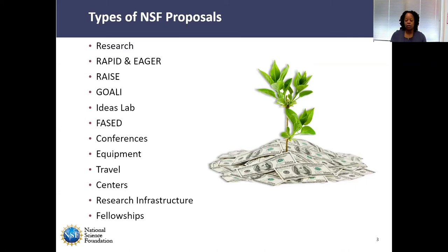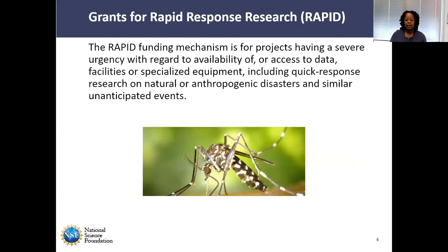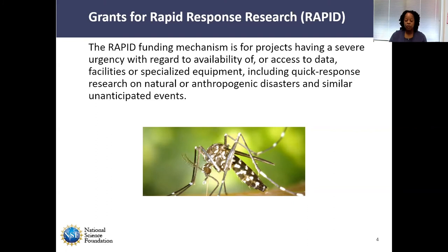Let's start with RAPID — Grants for Rapid Response Research. This is a type of proposal that can be submitted anytime to the Foundation. RAPID is a funding mechanism for projects that have severe urgency around availability or access to data, facilities, or specialized equipment, including quick response to natural, anthropogenic, or similar unanticipated events and disasters. If you're thinking about submitting a RAPID proposal, you must first contact a cognizant NSF program officer prior to submitting. You'll need to tell them why this is urgent and why it's not appropriate as a regular research proposal. This is why the success rate for RAPID proposals tends to be higher — you first have that conversation with the program officer.